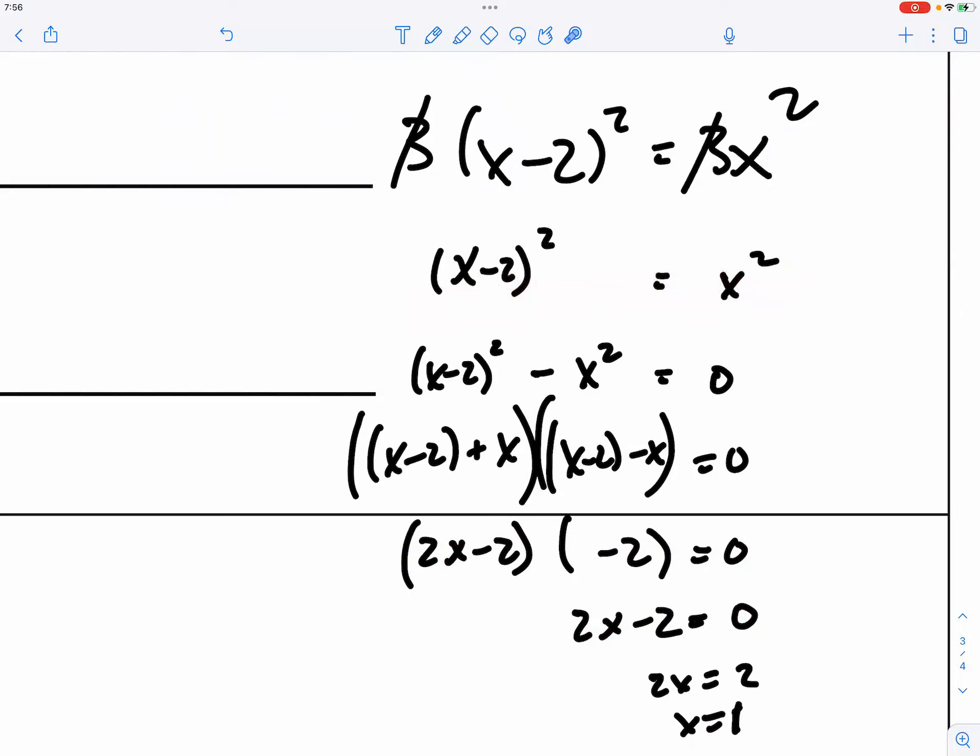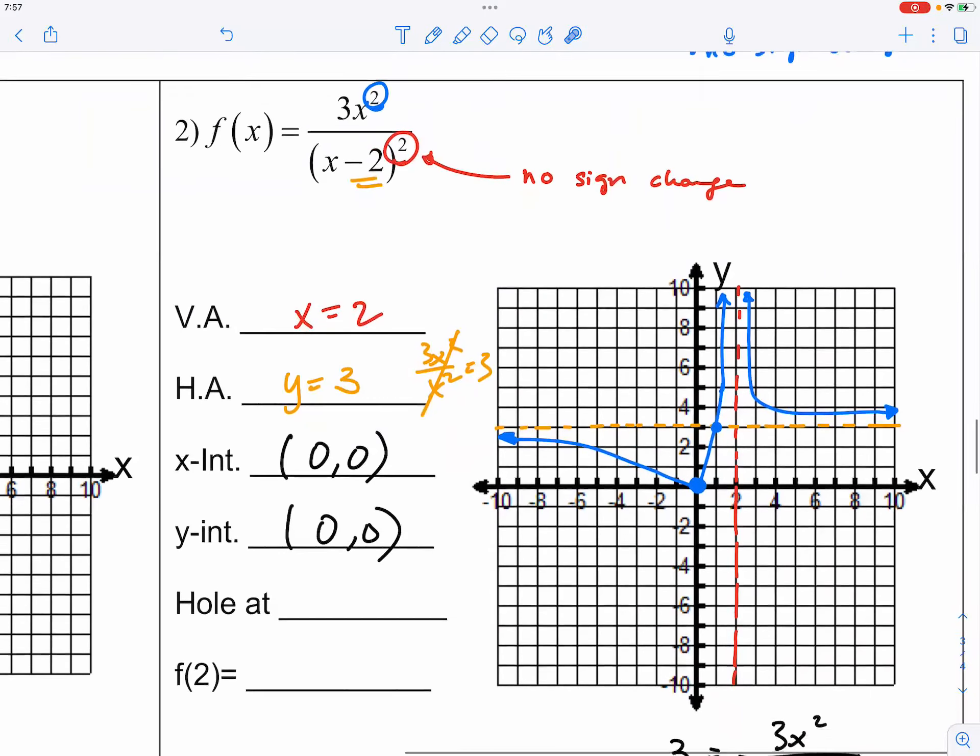this is also an SAT tip. If you have an option of taking a square root or factoring, you always factor. Because if you square root, you're missing some solutions. So, make sure you keep that in mind. If you have the chance of, if you have the option of taking a square root or factoring, you always factor. All right, so, this is the graph for number 2.